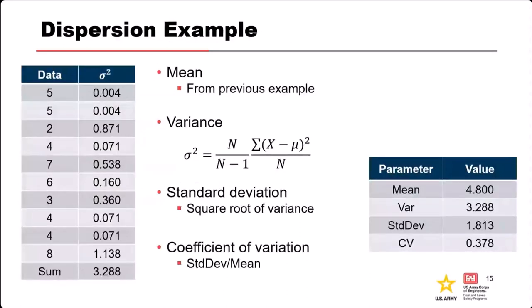Here's the dispersion example using the same data. Plug in the mean from the previous example, and for each X value compute X minus the mean squared, then sum them up. The N over N minus 1 is the bias correction factor. Plugging it all in gives sigma squared values for each data point; add them up to get the variance, take the square root for standard deviation, and divide by the mean to get the coefficient of variation.